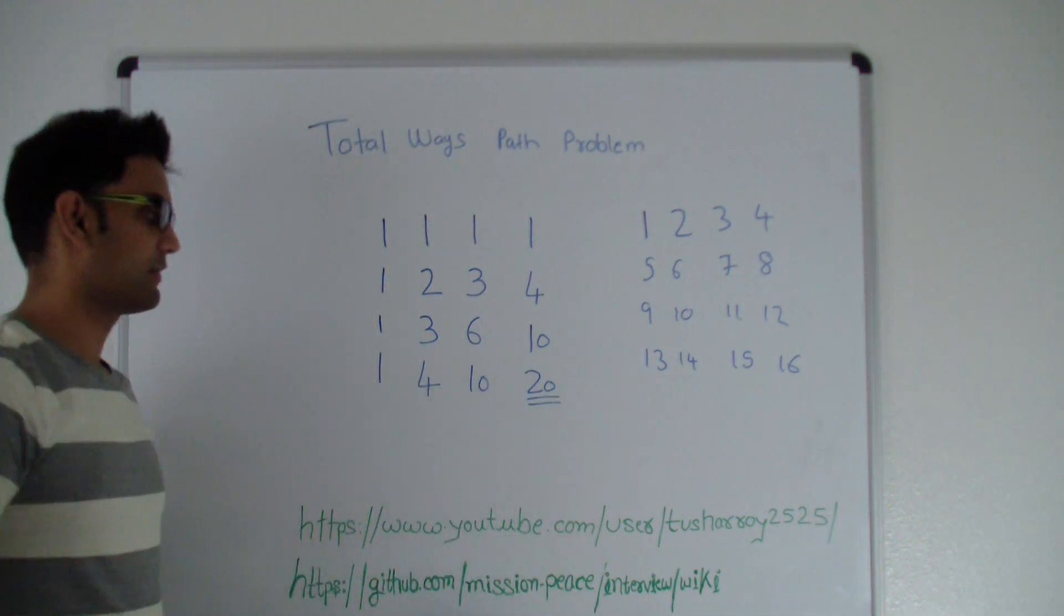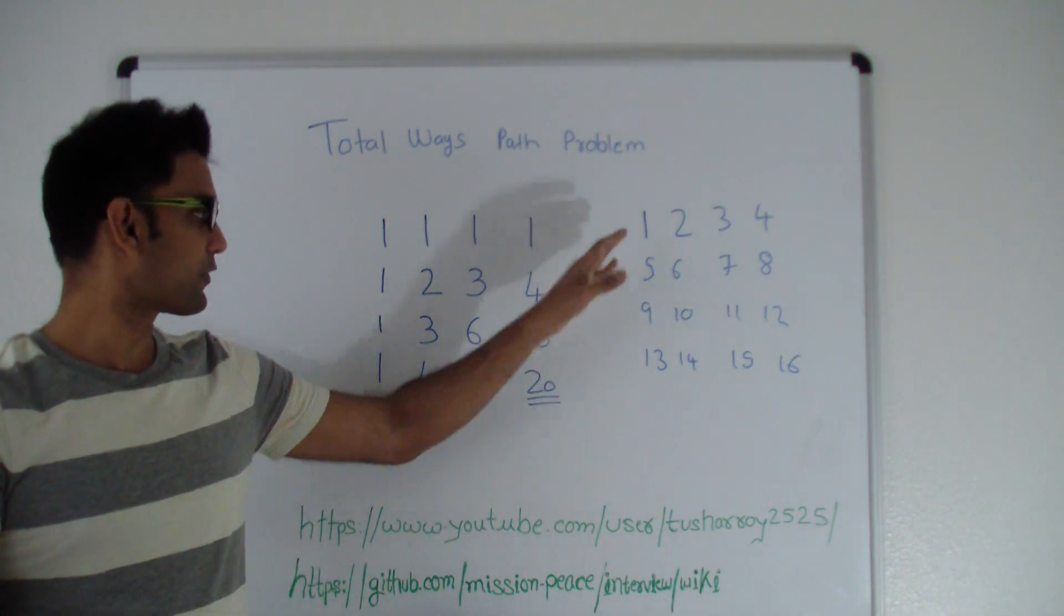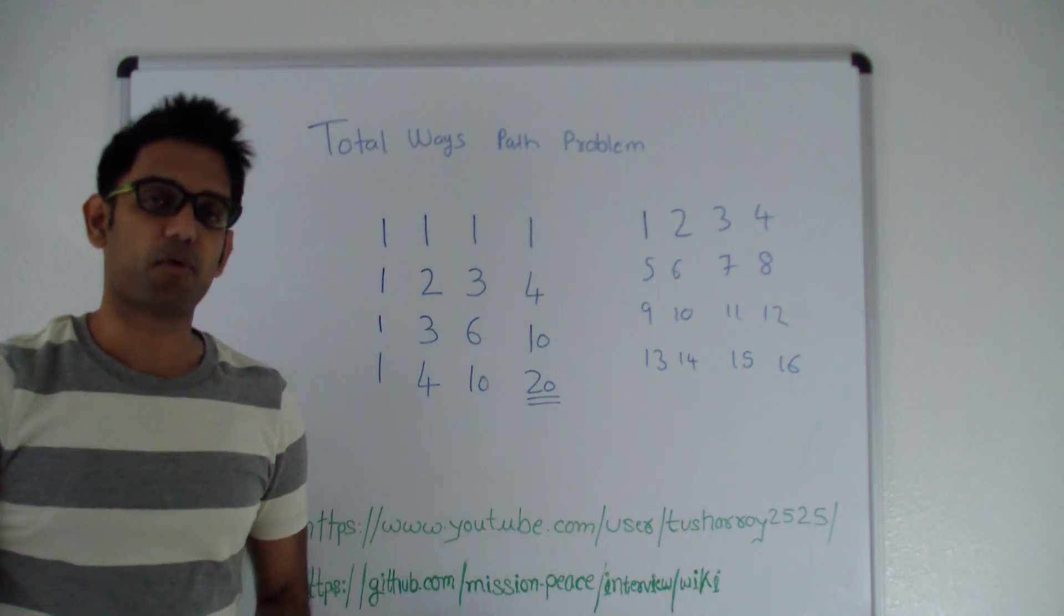So 20 is our answer. So again, there are 20 ways if you start from top left you can reach bottom right if you take only right or down.